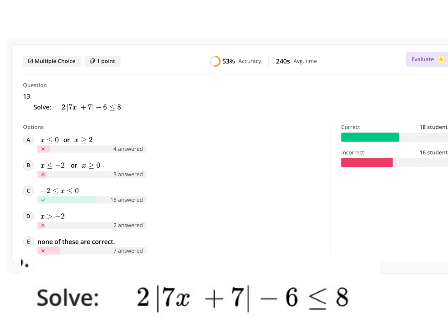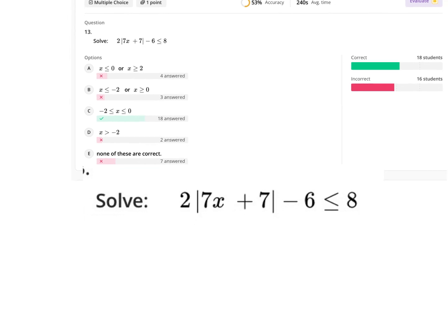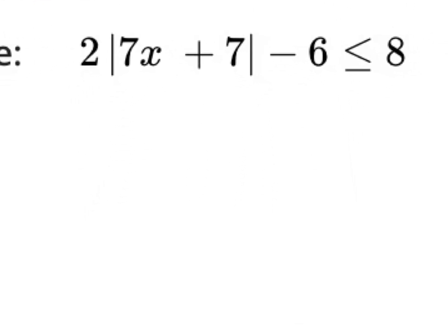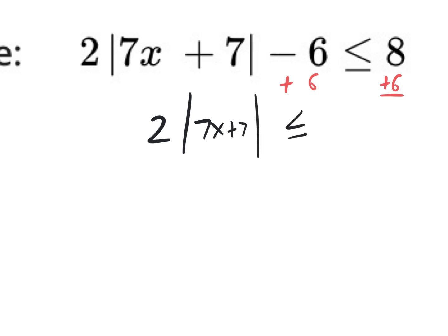Here's another one with 53% accuracy. This is another absolute value inequality. Apparently we struggled a lot with absolute value inequalities. All you have to do is isolate it, then do a positive and negative situation, then graph it to determine whether to write it together or apart with the word 'or'. Some students were multiplying the 2 in — that's not correct. To isolate, get rid of the minus 6 first by adding 6 to both sides, giving 2|7x + 7| ≤ 14.